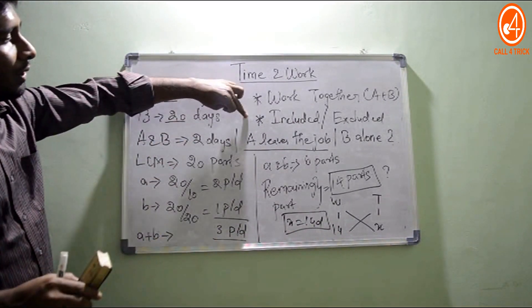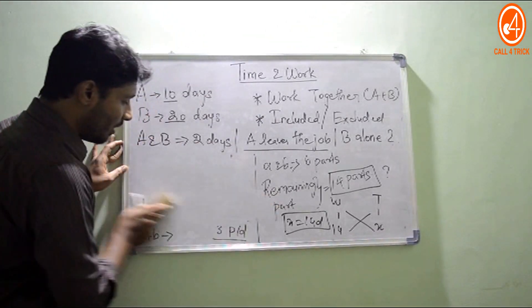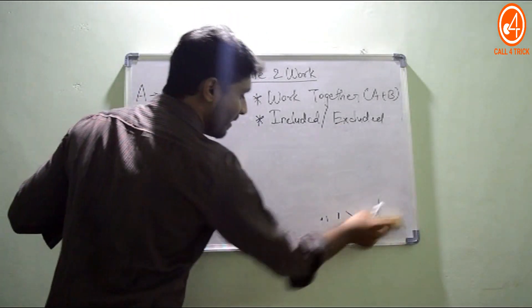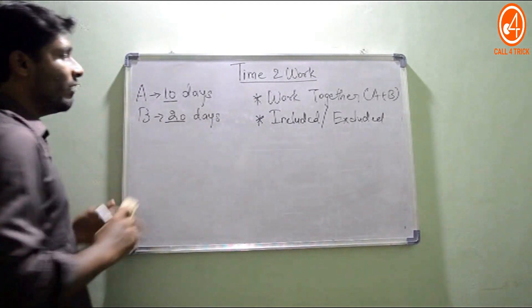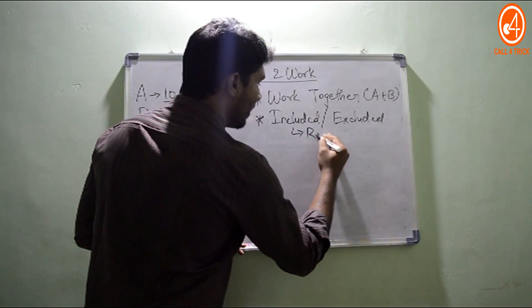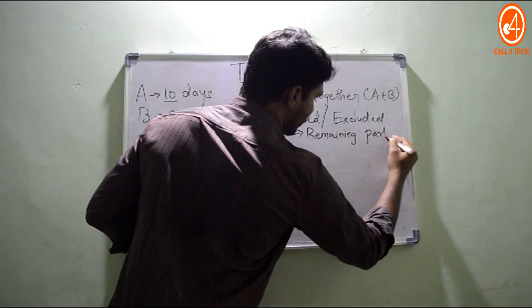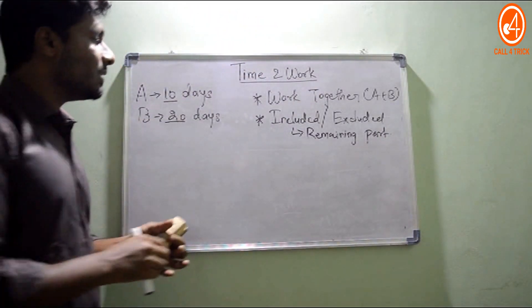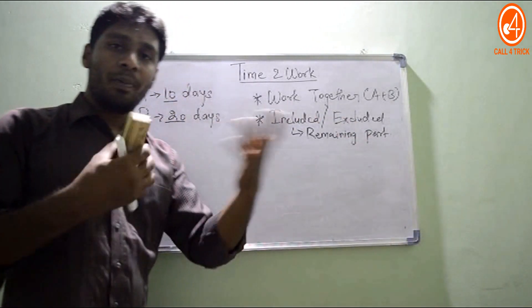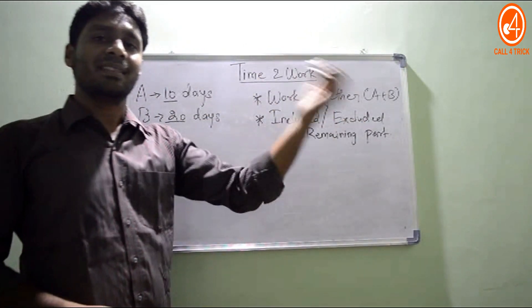This problem comes under the included-or-excluded category. When you face inclusive or exclusive questions, you just do one extra step: finding the remaining part of work. The remaining part acts like a launching pad — a hint for getting the next step. The three steps are: take LCM, find one-day work, and for included/excluded type, also find the remaining part of work.